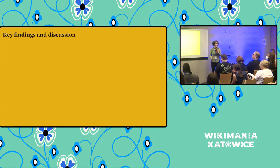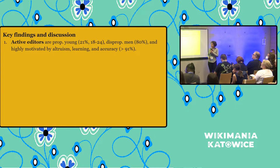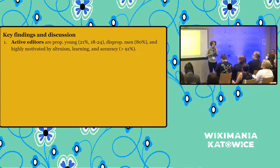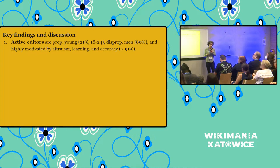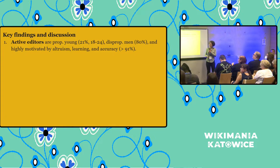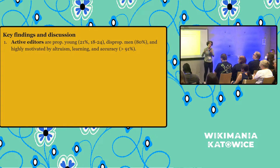So what did we learn? We learned that active editors are proportionately young. If you look at the distribution of age in the world, our active editors are around 21 percent aged between 18 and 24 year olds, which actually matches closely the global distribution of age across countries. They are disproportionately men — we have 80 percent of our active editors who are men. And they are highly motivated by altruism, learning, and accuracy. Editors voted more than 90 percent for these reasons as motivating them to contribute to the Wikimedia projects.